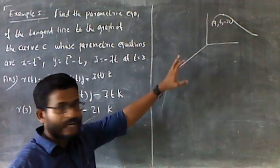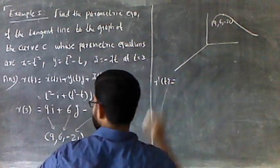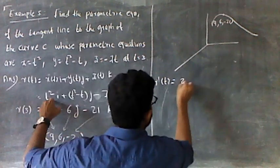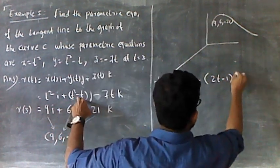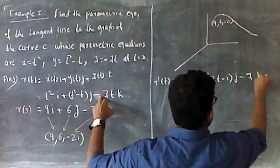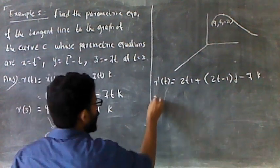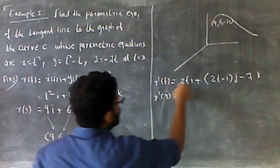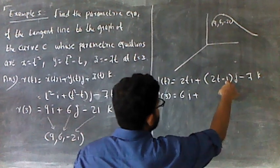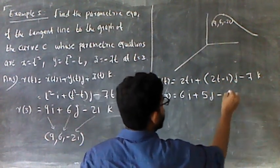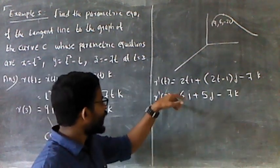Then R prime of t should be equal to 2pi i plus 2p minus 1 j minus 0 k. Then R prime of 3 is equal to 2pi plus 6pi, so 6pi minus 1 j.